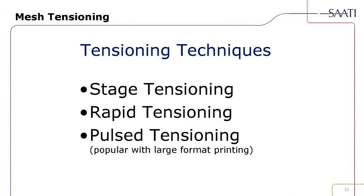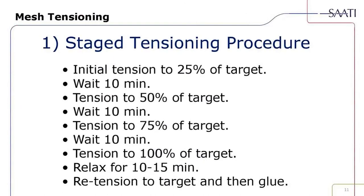Now for tensioning the fabric. Each fabric holds different tension guidelines. There are different types of tension: stage, rapid, and pulse. For stage tensioning, there are five targets. Tension to 25% of target, wait 10 minutes; re-tension to 50%, wait 10 minutes; tension to 75%, wait 10 minutes; then 100%, wait 15 minutes. After relaxation, re-tension back to the target for that specific mesh count, then glue or send the roller frame to reclaim for mesh prep.